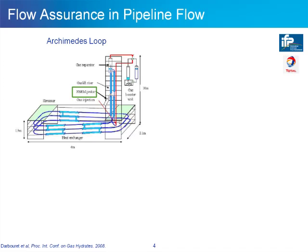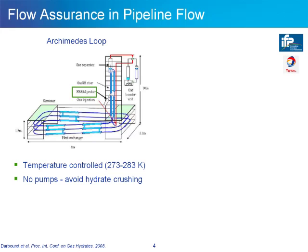In our next example, FBRM was also used to measure flow assurance in a pipeline. This work was performed by IFP and Total in France. There were two experimental setups, the first of which was an Archimedes loop, which was temperature controlled from 273 to 283 Kelvin. In order to avoid hydrate crushing, no pumps were used; gas lift was used to regulate the flow. The system had an overall length of 36 meters and an internal diameter of approximately 1 centimeter.